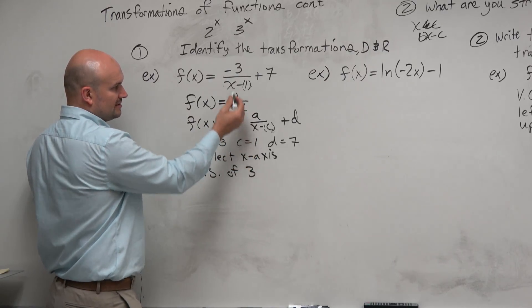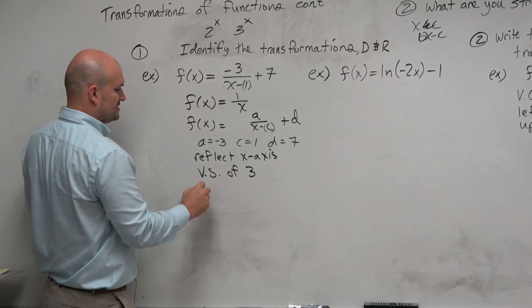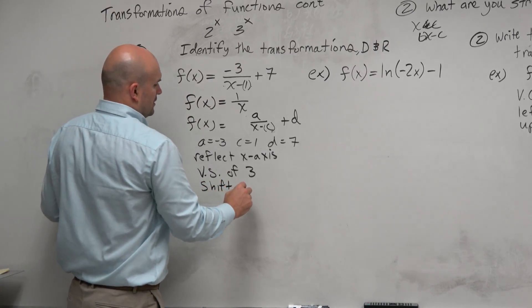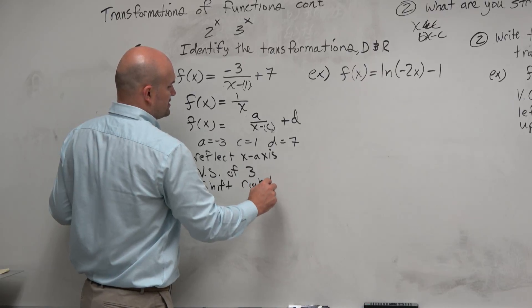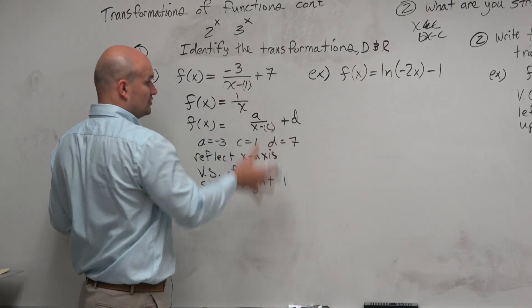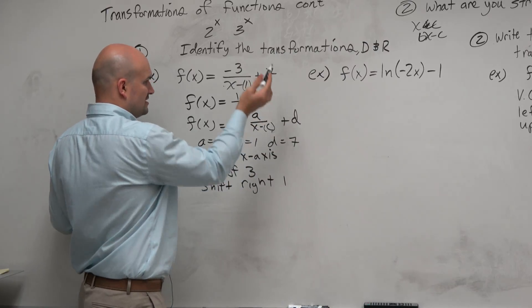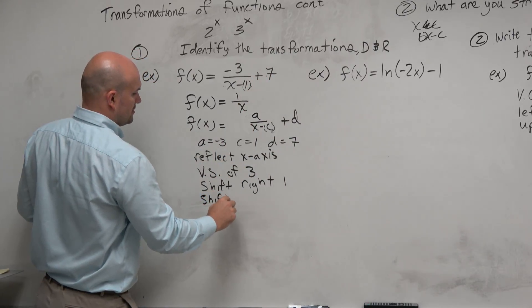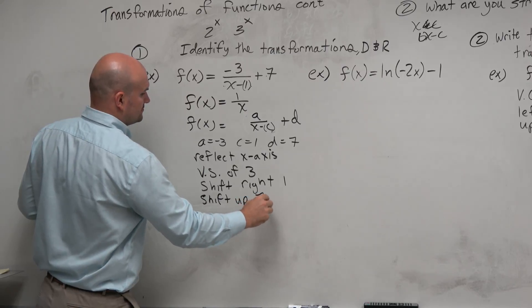Here, this is telling me that I'm shifting it 1 unit to the right. So I could say shift right 1 unit. And then remember, d was our vertical shift up or down. Since that's positive, that's going to be shifting it up 7. So I could say shift up 7.